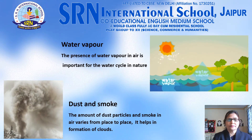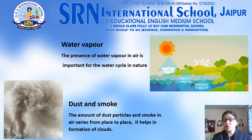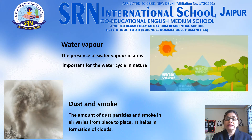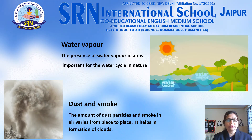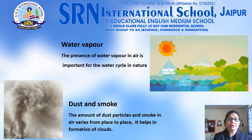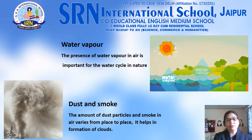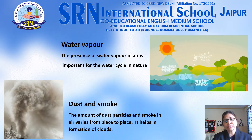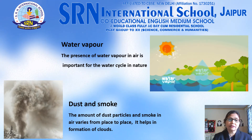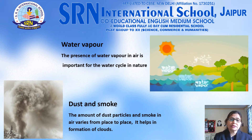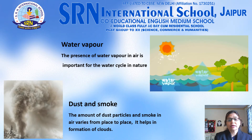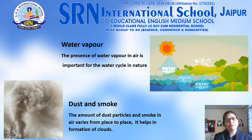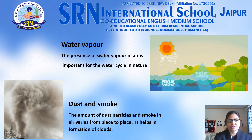Carbon dioxide is also responsible for trapping the sun's heat. Carbon dioxide is also used in fire extinguishers. The presence of water vapor in air is important for the water cycle in nature. The amount of dust particles and smoke in air varies from place to place, and it helps in the formation of clouds.